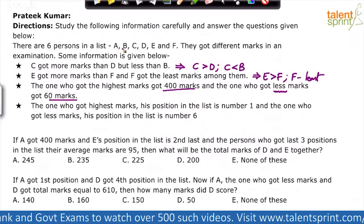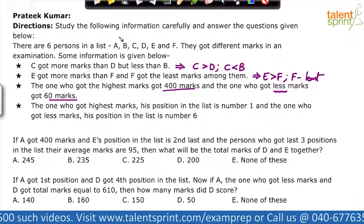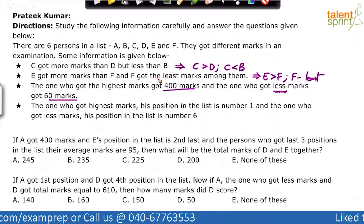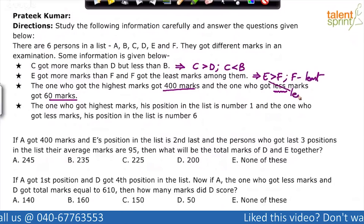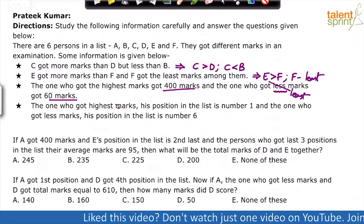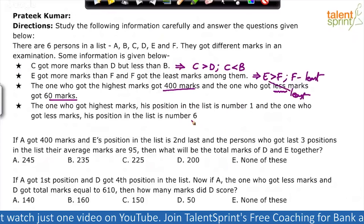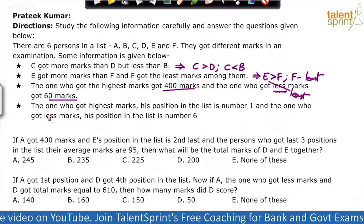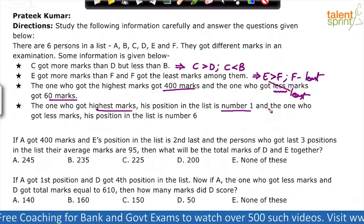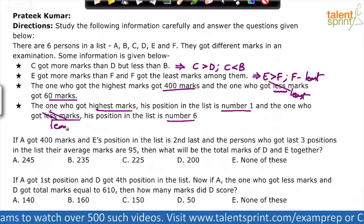In a group of six persons, one gets the highest and five have less marks — so which of the five are we talking about? Let's assume 'less' means 'least' here. The one who got the highest has 400 marks, the one who got the least has 60 marks. The last statement confirms this: the one with the highest marks is in position number one, and the one with the least marks is in position number six. So 'less' is actually 'least'.